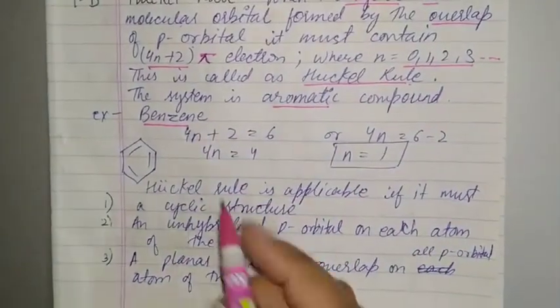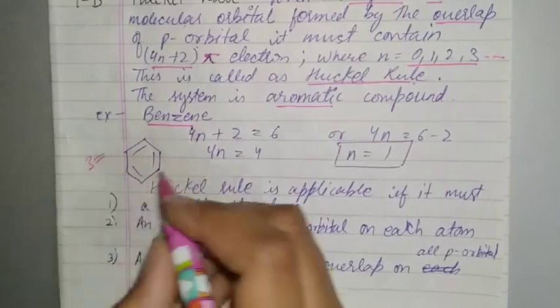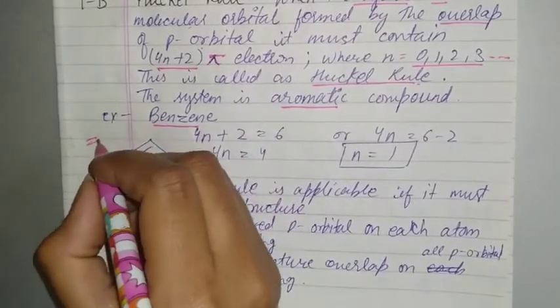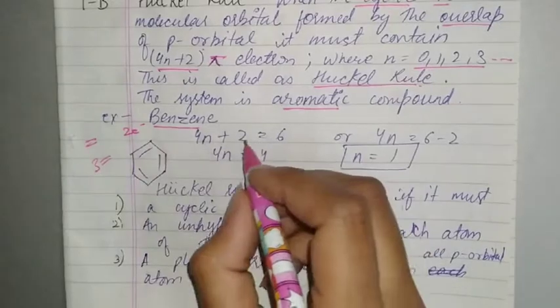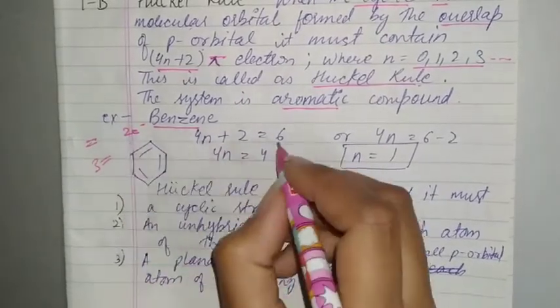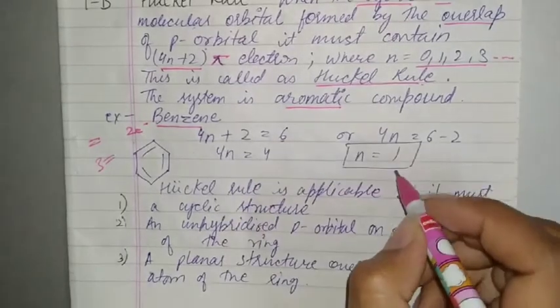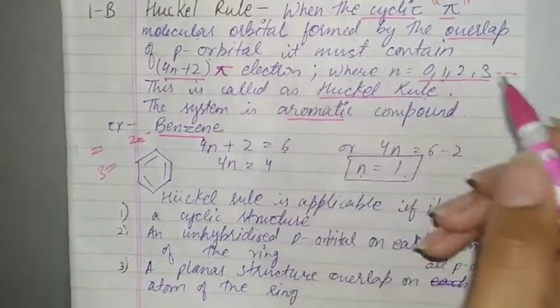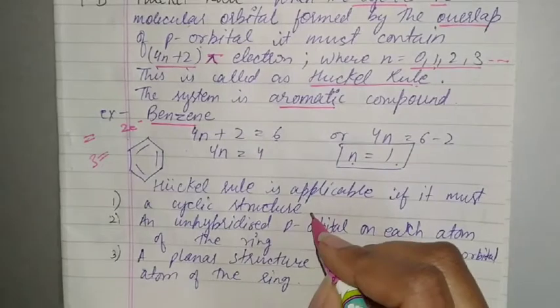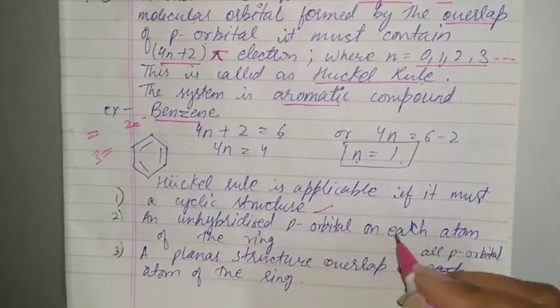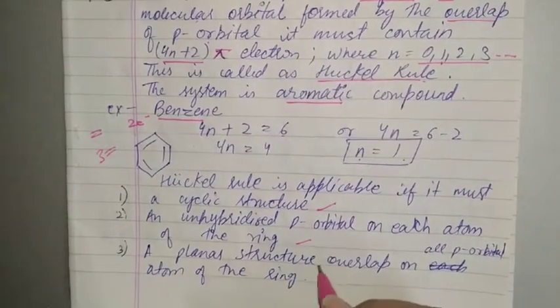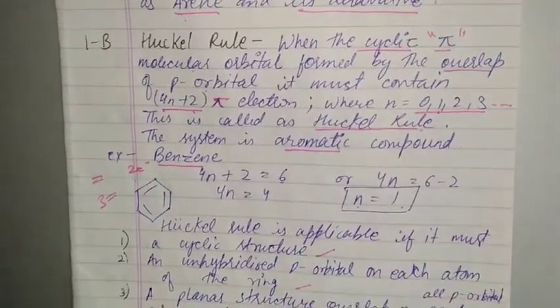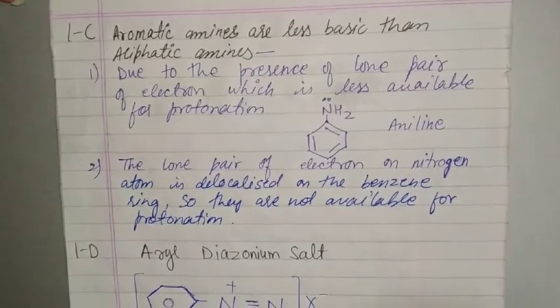For example we have benzene with 3 double bonds. So 4n plus 2 equals 6. One double bond equals 2 electrons, so 3 times 2 equals 6. After calculating the equation we have n equal to 1, which is an integer, so Huckel rule follows. Huckel rule is applicable when we have cyclic structure, unhybridized p-orbital on each atom of the ring, and planar structure with overlap on all p-orbitals.